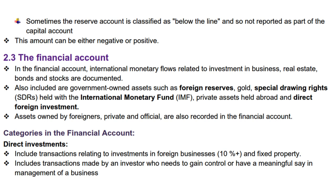For example, think of a South African company that invests in a foreign business and buys a bunch of real estate overseas — all those transactions would be recorded in the financial account. Category 1: Direct investments. Direct investments involve transactions related to investments in foreign businesses and fixed properties. These are the big deals where an investor wants to gain control or have a significant say in the management of a foreign business. For instance, a South African company buying a majority stake, say 51% or more, in a foreign tech firm falls into this category.